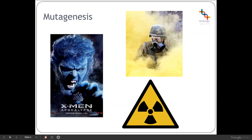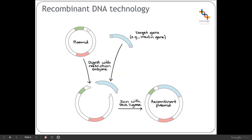What we can also do, instead of mutagenesis, is carry out something called recombinant DNA technology. Within recombinant DNA technology, we use our advances in DNA to manipulate it within the lab and improve our microorganisms more specifically than mutagenesis allows. Mutagenesis causes random mutations, whereas recombinant DNA technology allows us to cause very specific changes. We cut a fragment of DNA — for example, the insulin gene — from a known chromosome, and also cut open a bacterial plasmid. We put them together so the target gene is inserted into the bacterial plasmid, creating a recombinant plasmid.